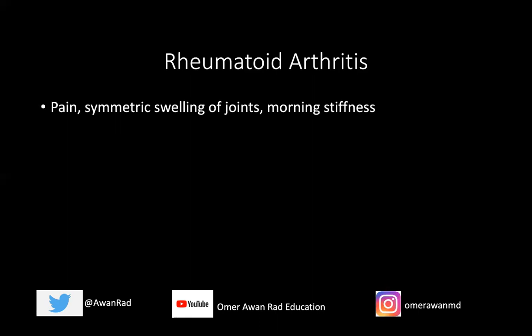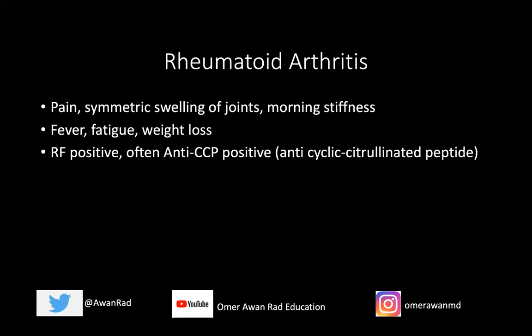The key presentation is symmetric pain and swelling of joints — typically bilateral, with the same joints involved on both sides. Morning stiffness is critical: in rheumatoid arthritis and all inflammatory arthritis, pain is worse in the morning and gets better throughout the day. That's in distinction to degenerative arthritis like osteoarthritis, where pain is worse with activity and better with rest. Constitutional symptoms like fever, fatigue, and weight loss are also present. Lab values: RF is typically positive, and anti-cyclic citrullinated peptide (anti-CCP) antibodies are typically positive — and anti-CCP is more specific than RF.